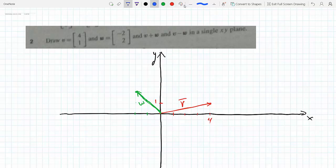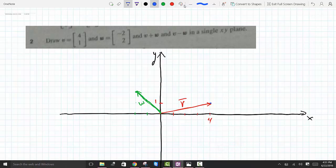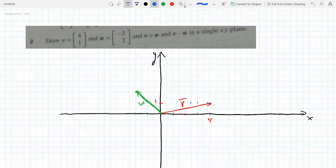If this is (-2,2), from the tip of this guy here I would go negative 2, 2. So I would go 1, 2 and I would go up 1, 2. So this here would be W just graphed from a different place.